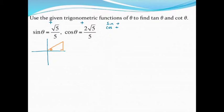they give you sine, they're really telling you the opposite side over the hypotenuse. So the opposite side must be square root of five, and the hypotenuse must be five. Just a note: the hypotenuse will always be a positive number. In some problems, you'll have negative values and a choice of what to make negative, but the hypotenuse will never be negative.